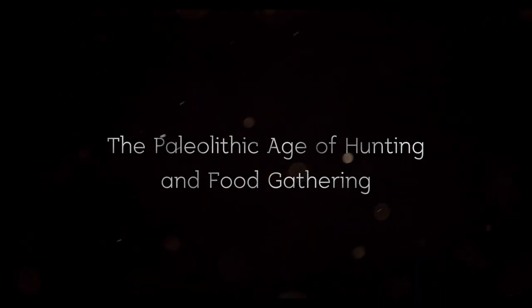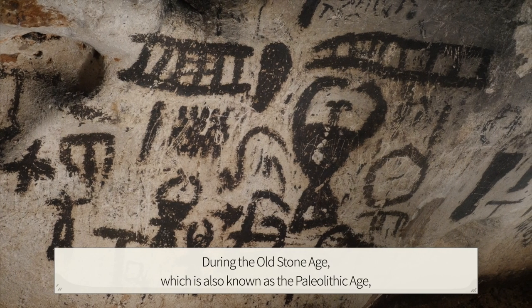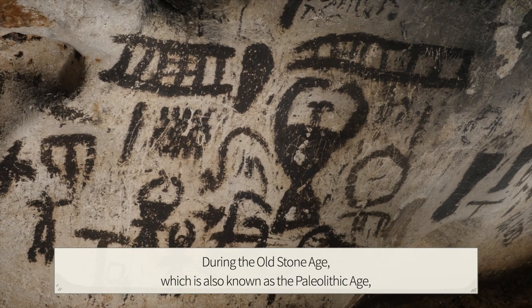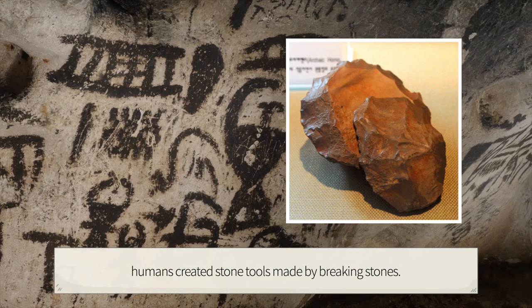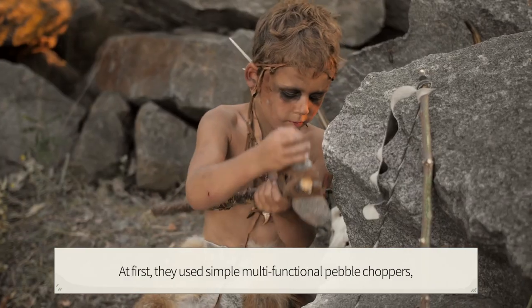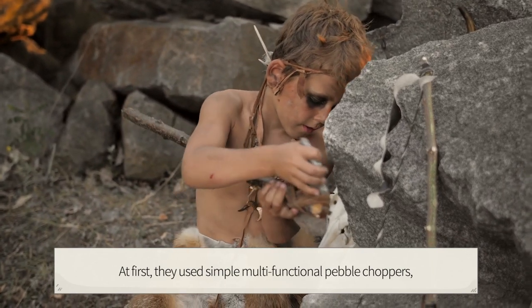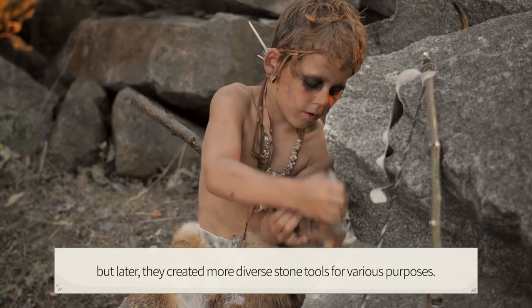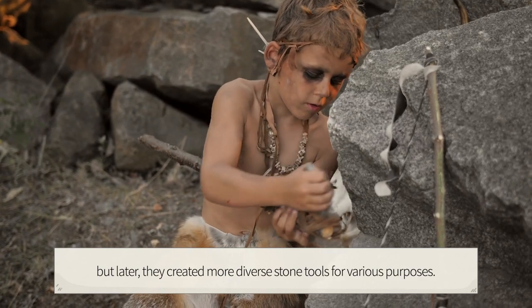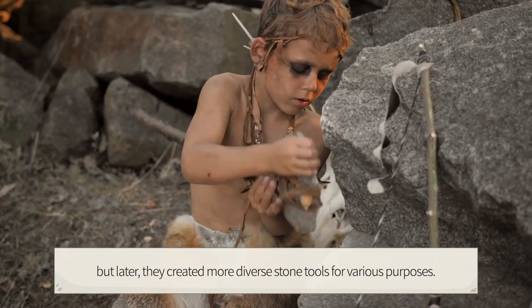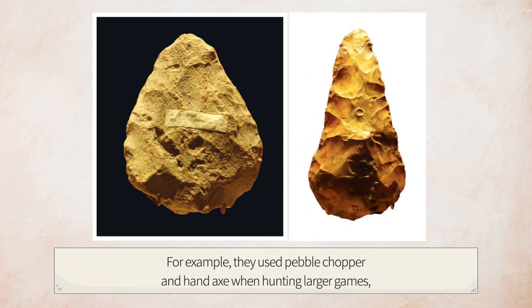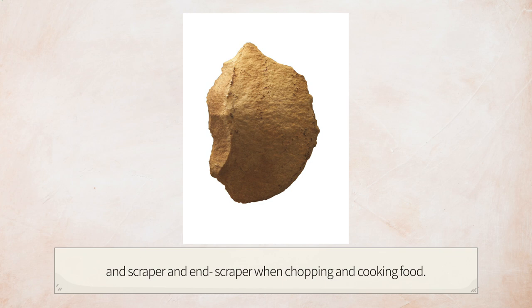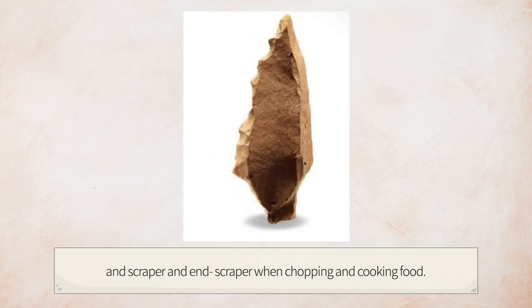During the Old Stone Age, also known as the Paleolithic Age, humans created stone tools made by breaking stones. At first they used simple multifunctional pebble choppers, but later created more diverse stone tools for various purposes. For example, they used pebble choppers and hand axes when hunting larger game, and scrapers and end scrapers when chopping and cooking food.